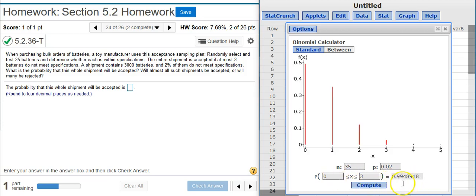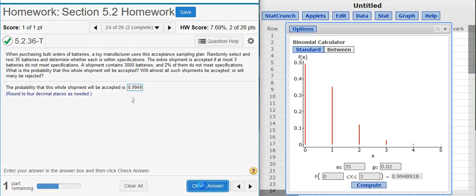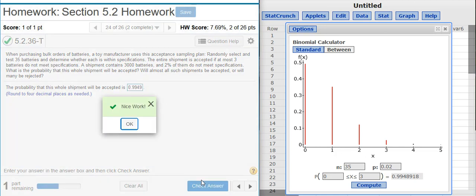And there we get our probability, 0.9948918. We were asked to round to four decimal places. So, that comes out to be 0.9949. Nice work!